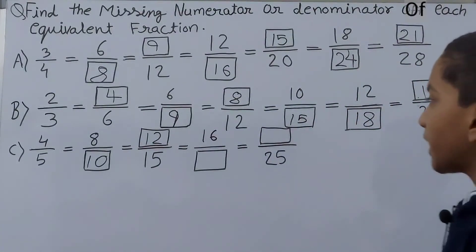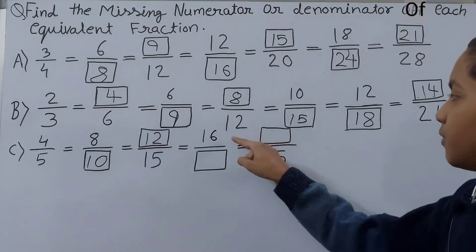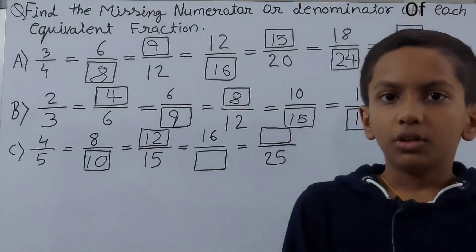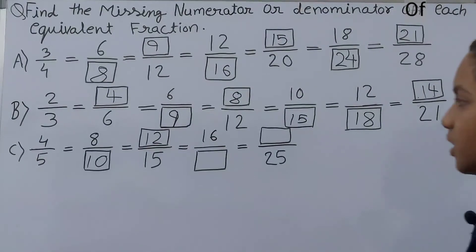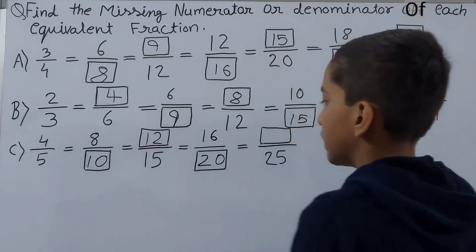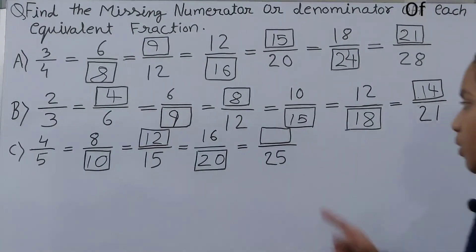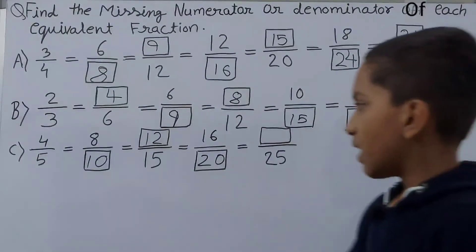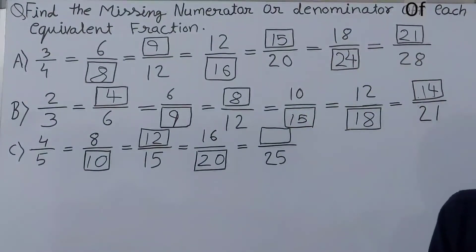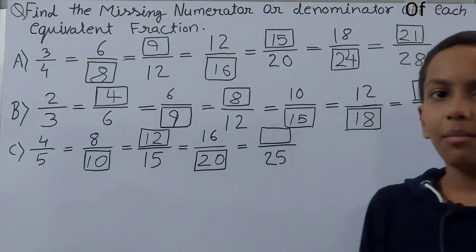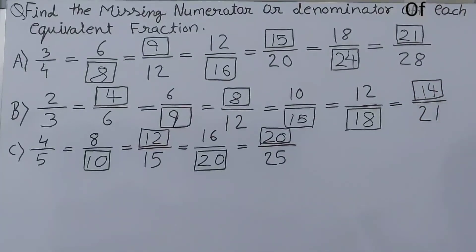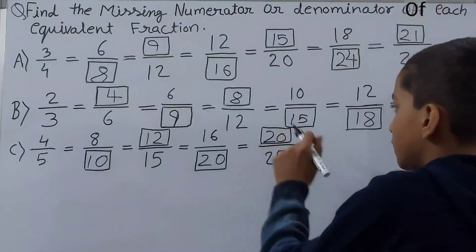Next: 16/□ — we have the numerator 16, and our numerator is 4: 4 times 4 is 16. So 5 times 4 is 20, meaning 20 goes in the denominator. Next: □/25 — we have the denominator 25, and our denominator is 5: 5 times 5 is 25. So 4 times 5 is 20, meaning 20 goes in the numerator.